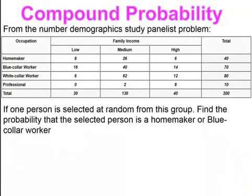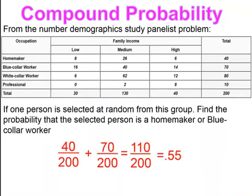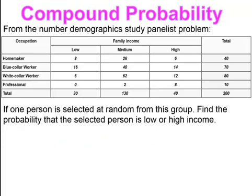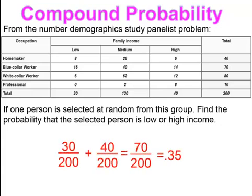Pause and try. You should have ended up with 0.55 as the probability. Pause and try. And in this case, you would end up with 0.35 as your probability.